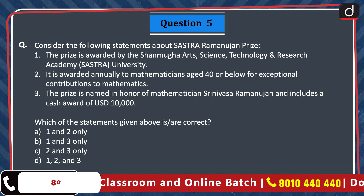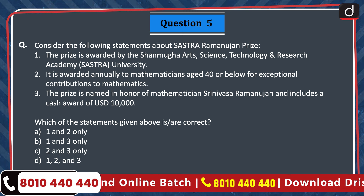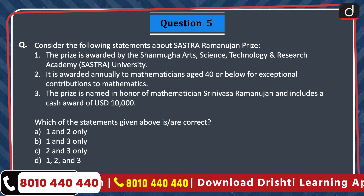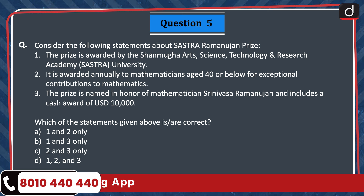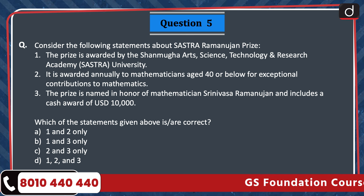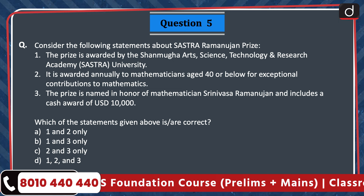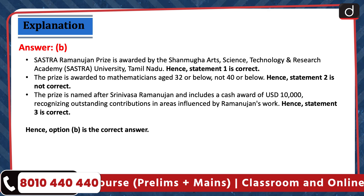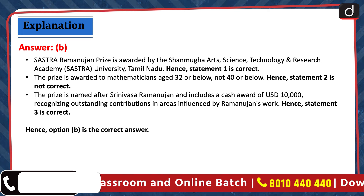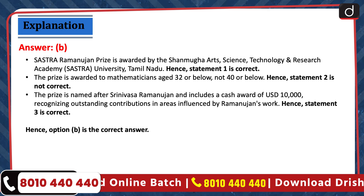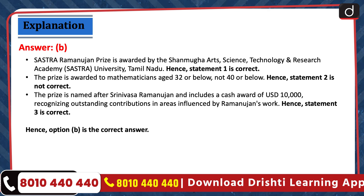Next question. Consider the following statements about the Sastra Ramanujan Prize. 1. The prize is awarded by the Shanmugha Arts, Science, Technology and Research Academy University. 2. It is awarded annually to mathematicians aged 40 or below for exceptional contributions to mathematics. 3. The prize is named in honour of mathematician Srinivas Ramanujan and includes a cash award of 10,000 US dollars. The correct answer is option B, 1 and 3 only. The Sastra Ramanujan Prize is awarded by the Shanmugha Arts, Science, Technology and Research Academy University, Tamil Nadu. Hence, statement 1 is correct. The prize is awarded to mathematicians aged 32 or below, not 40 or below. Hence, statement 2 is not correct.